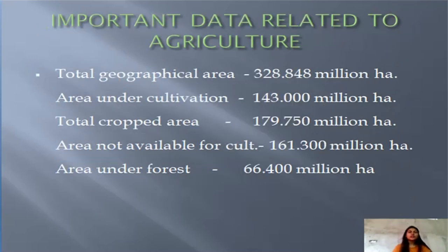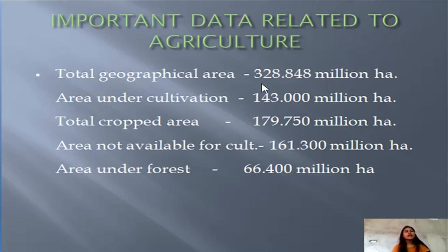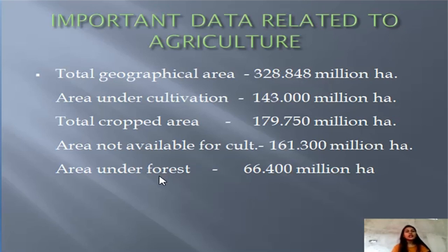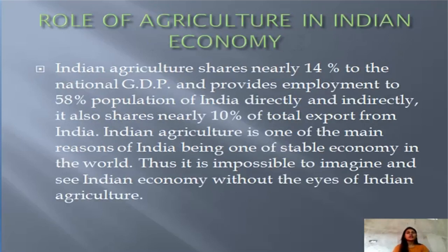Here are some important data related to agriculture in India: total geographical area is 328.848 million hectares, area under cultivation is 143 million hectares, total reported area is 179.750 million hectares, area not available for cultivation is 161.300 million hectares, and area under forest is 66.4 million hectares.